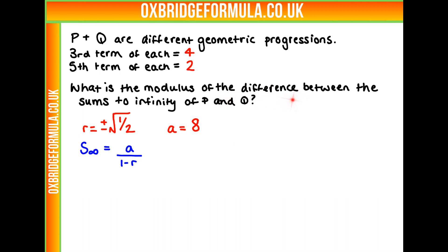That is going to be a divided by 1 minus r. And because we're looking for the difference between the two, let's take them away from each other. We've got our 8 divided by our 1 take away root of a half, take away 8 over 1 plus root of a half. That's our difference between our two sums to infinity.